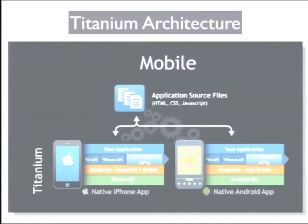More about Titanium architecture: we're going to write our code in JavaScript, CSS, or HTML on the top layer. Then Titanium is going to take it and compile it to Objective-C or Java and run it on iOS or Android devices separately. So we are writing once, but using the same code for iOS and Android. Similarly for desktop and BlackBerry — desktop has a little different API, but BlackBerry is almost similar.